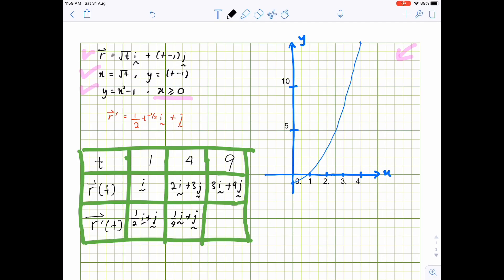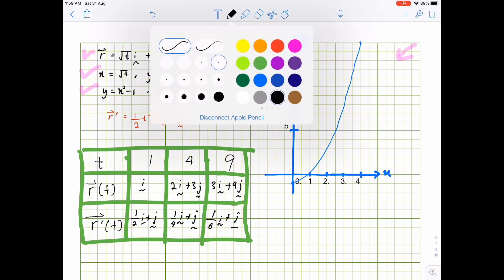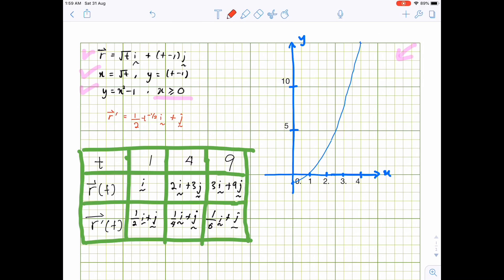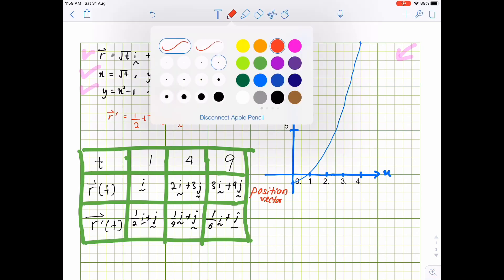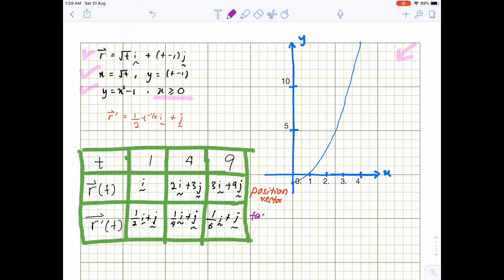And the last one, one-sixth i plus j. So I can say this one is the position vector, while this one is the tangent vector.